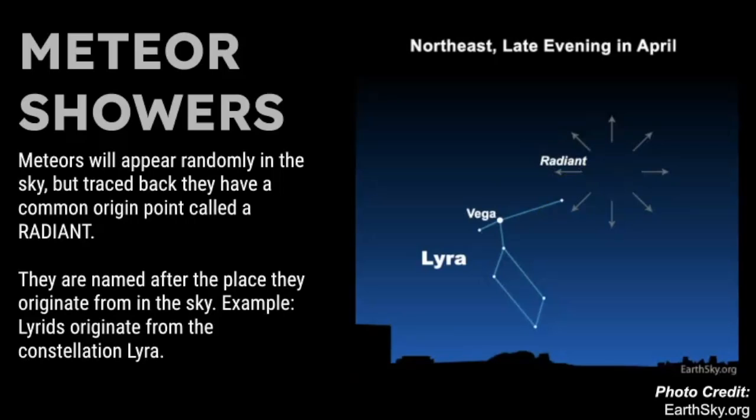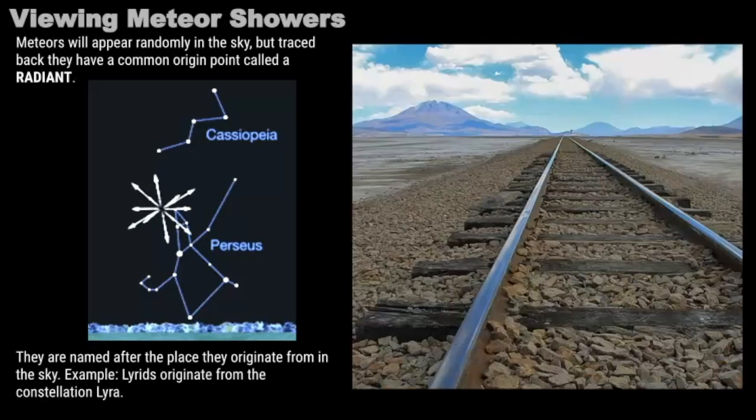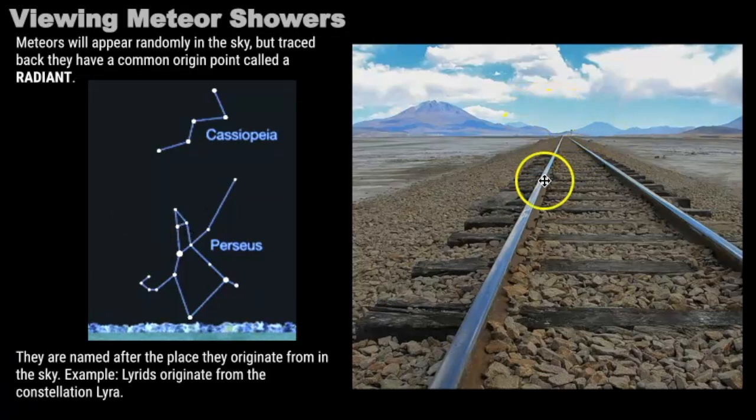This concept is very similar to train tracks. If you take up this picture of a train track, we know that these train tracks are parallel, and they appear to converge at a single point on the horizon according to the observer. But that's not true. We just know that these railroad tracks are parallel.